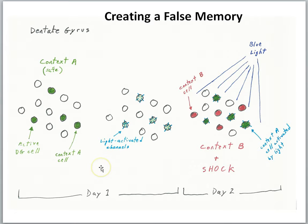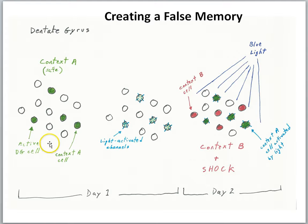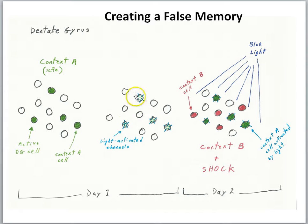Finally, let's look at an experiment designed to answer the question: could scientists create a false memory in an animal? Cells in the dentate gyrus respond in unique ways to different contexts. On day one of the experiment, they put the animal in context A — the safe context. A certain population of cells responds to context A, and those cells were allowed to insert the light-activated proteins, making them controllable with light later on. So context A is safe, and the engram cells for context A are now light-activated.